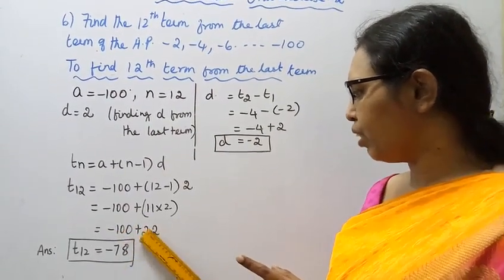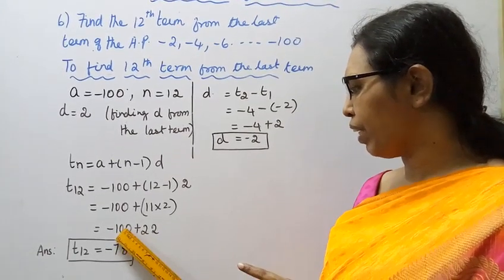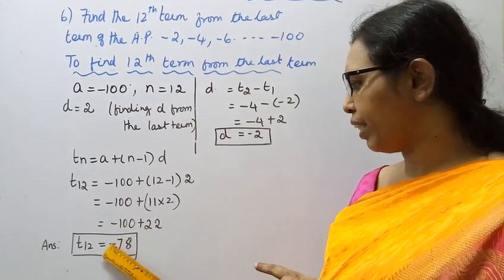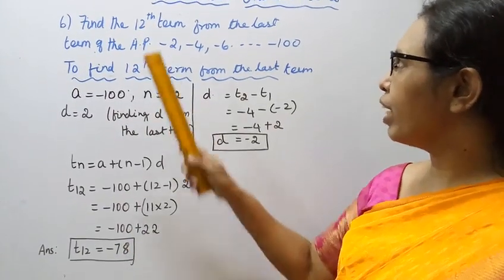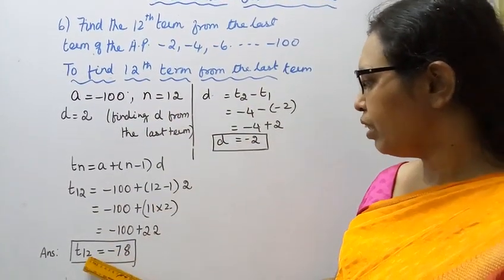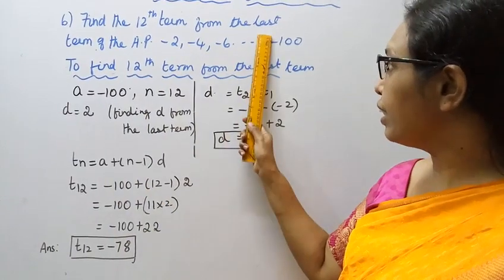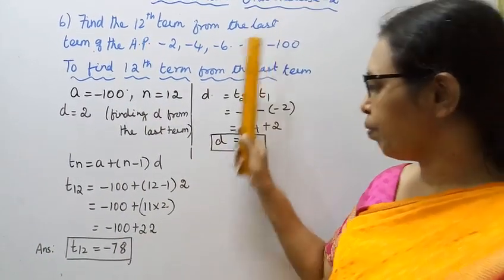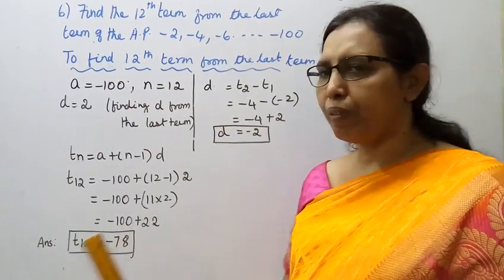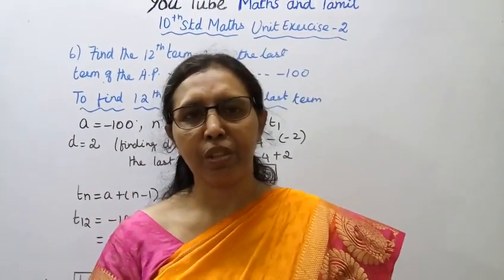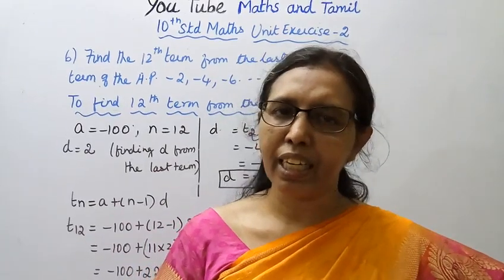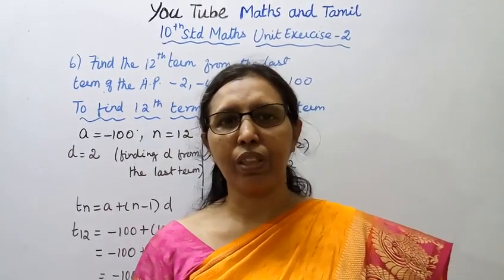Since 100 is greater than 22, the sign is minus: t12 = -78. The 12th term from the last term is -78. This channel helps you get 100 marks. Please subscribe to the channel and click the notification bell for more videos.